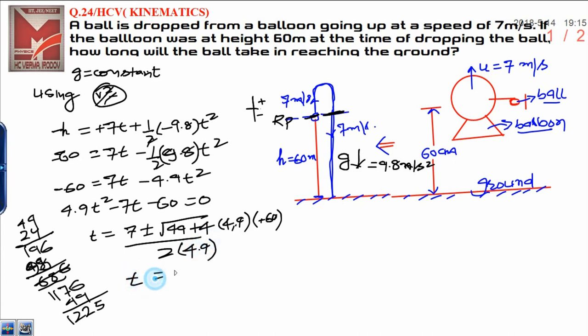Now solve it. t is equal to—only positive sign you have to take because time is never negative. That is why it is root 1225 upon 9.8. Finally, it will be 7 plus—root of 1225 is 35—that is why you have to write here 35 divided by 9.8.